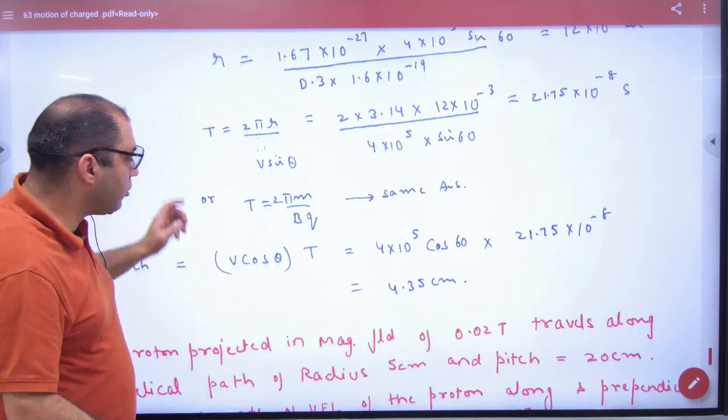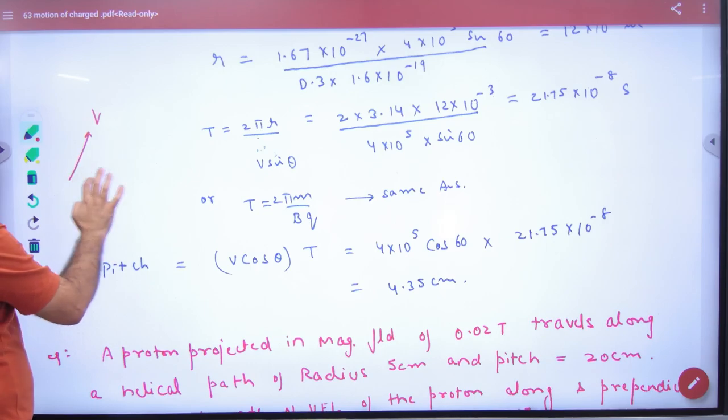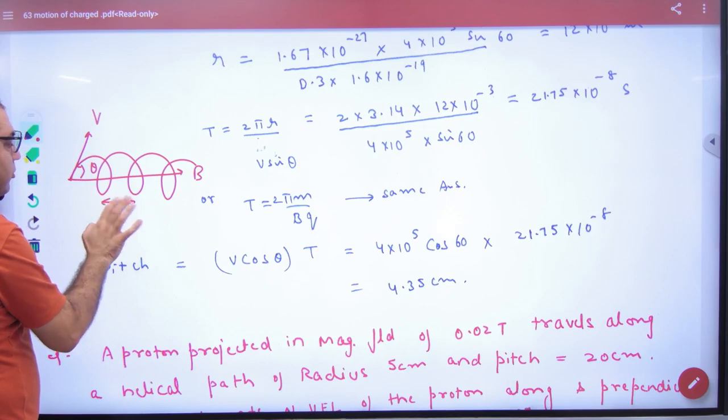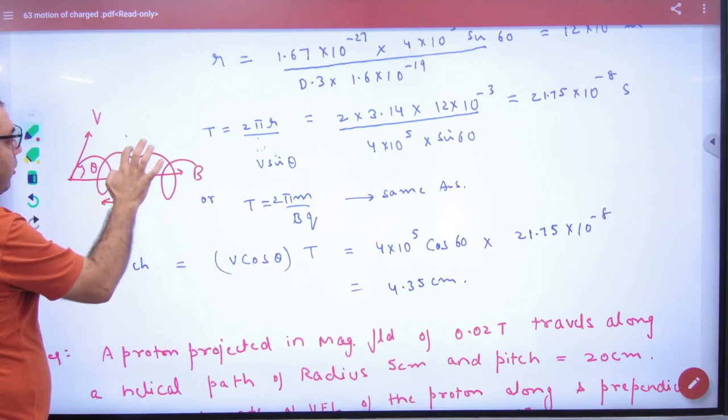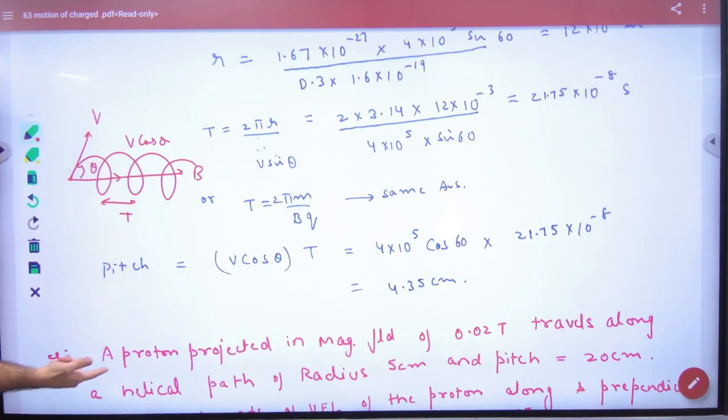Then what is the pitch? What was the pitch? The pitch was done. If you think the velocity of v vector making an angle of theta something like this, this is helix. So we call this distance for pitch.